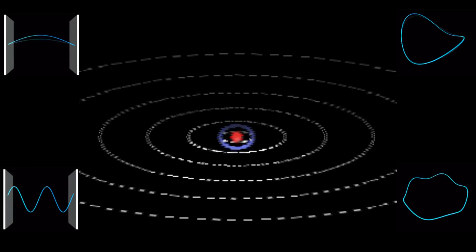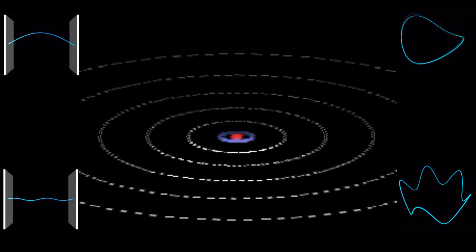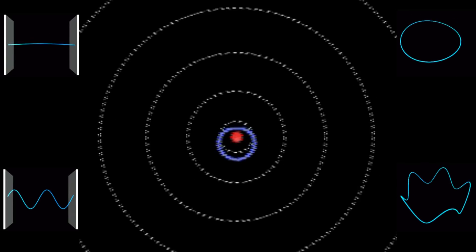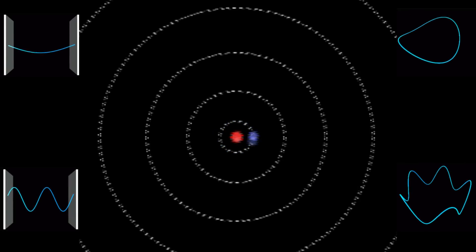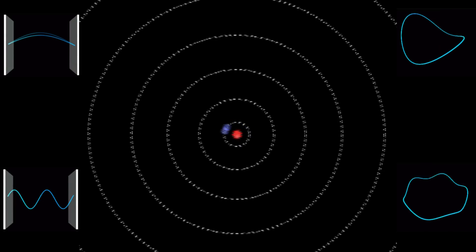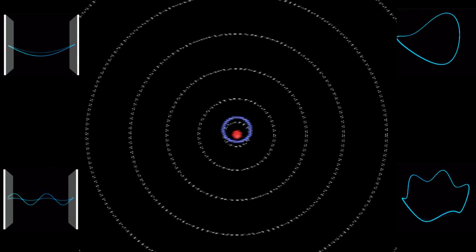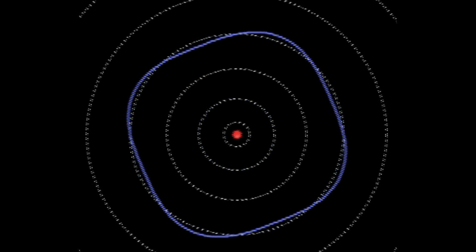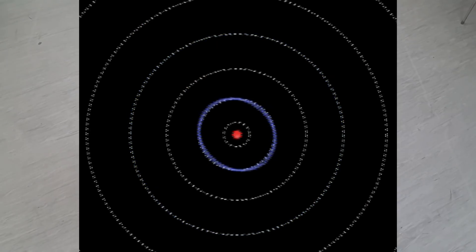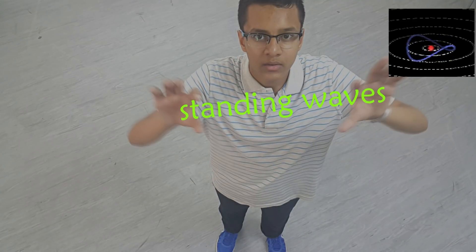Now let's bring the ideas together. Standing waves can vibrate only at particular wavelengths, meaning their modes of vibration are quantized. And as per theories, electrons can only exist in certain energy states, meaning the energy states are quantized. That shows electrons move as standing waves.